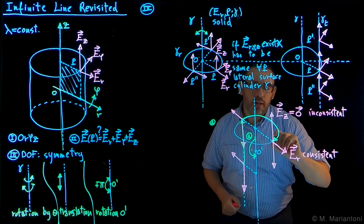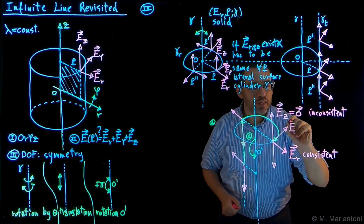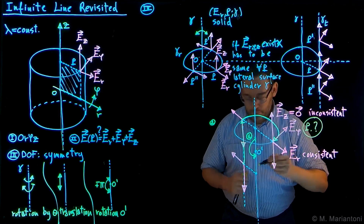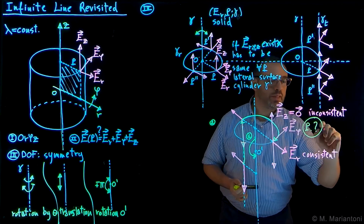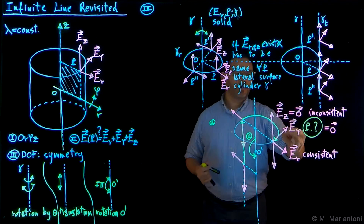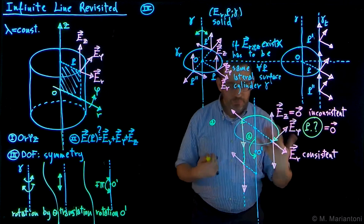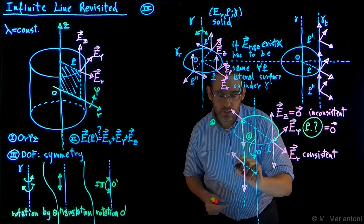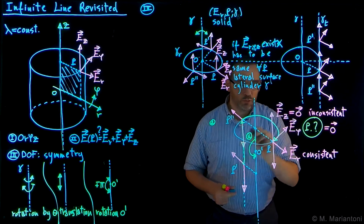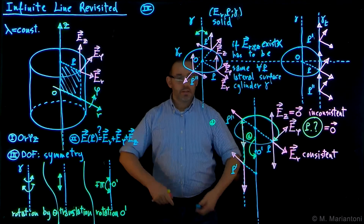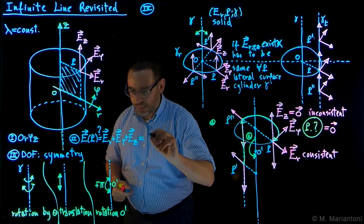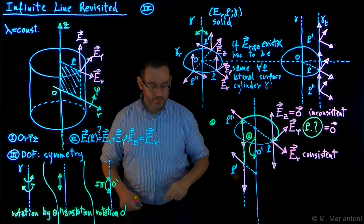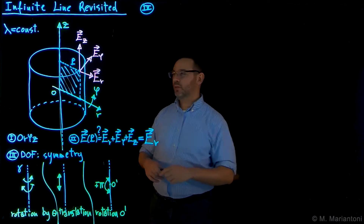What about the most complicated one, E bar phi? I can tell you that it's also inconsistent, which means it has to be equal to zero as well — but prove it. So both E bar phi and EZ are inconsistent, which means they have to be zero. Only ER can be different than zero. These are the three symmetries we used to show consistency.